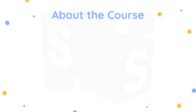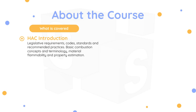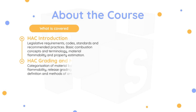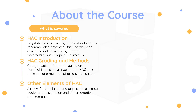Topics covered in the course include legislative requirements, codes, standards and recommended practices, basic combustion concepts and terminology, material flammability and property estimation, categorization of material based on flammability, release grading, hazardous area classification zone definition, methods of area classification, air flow for ventilation and dispersion, electrical equipment designation, and documentation requirements.